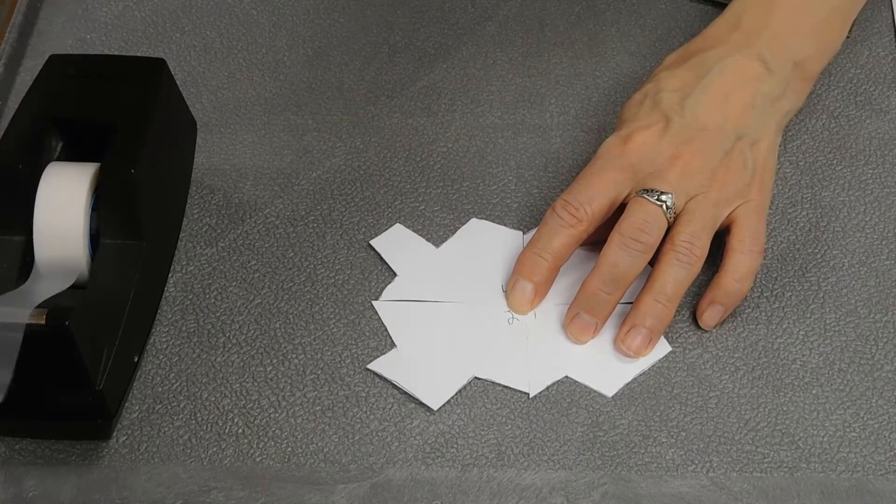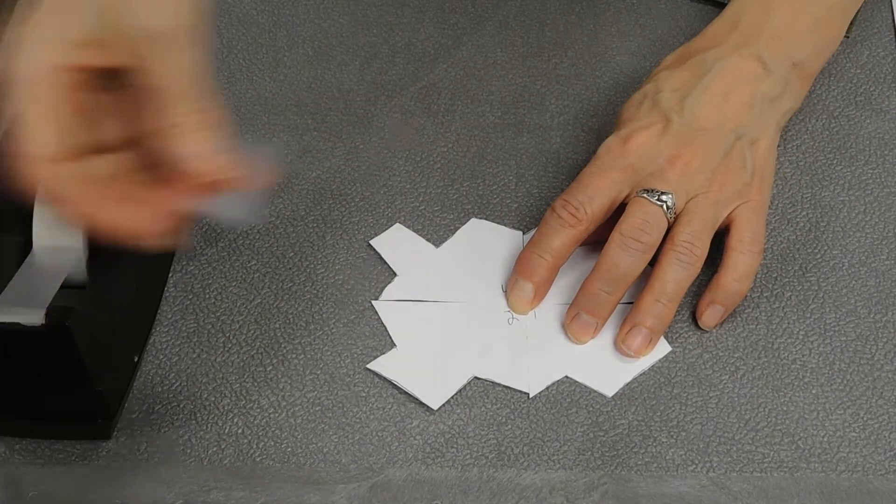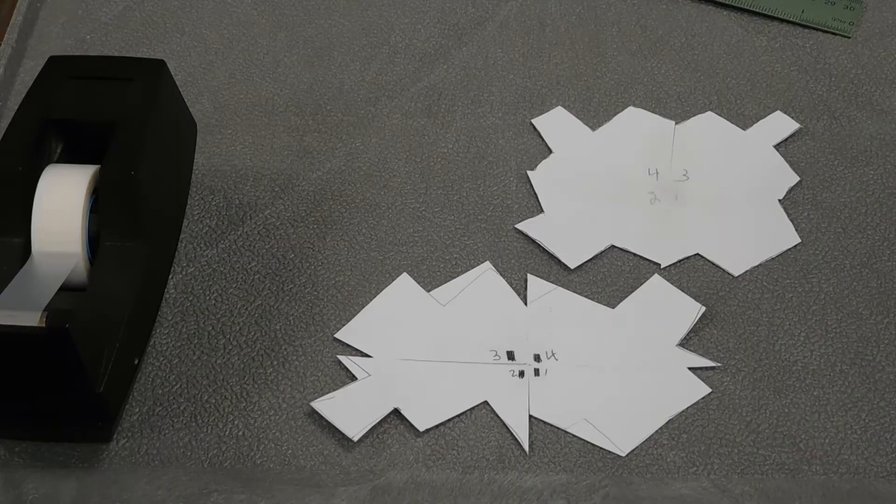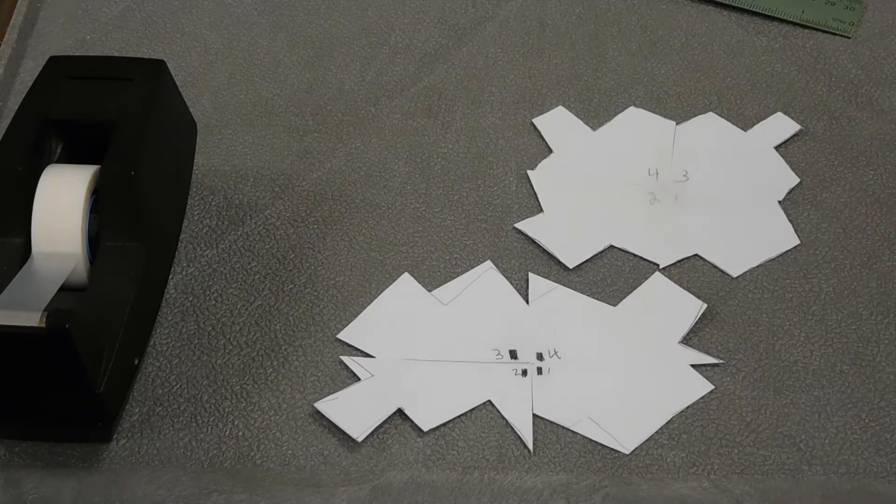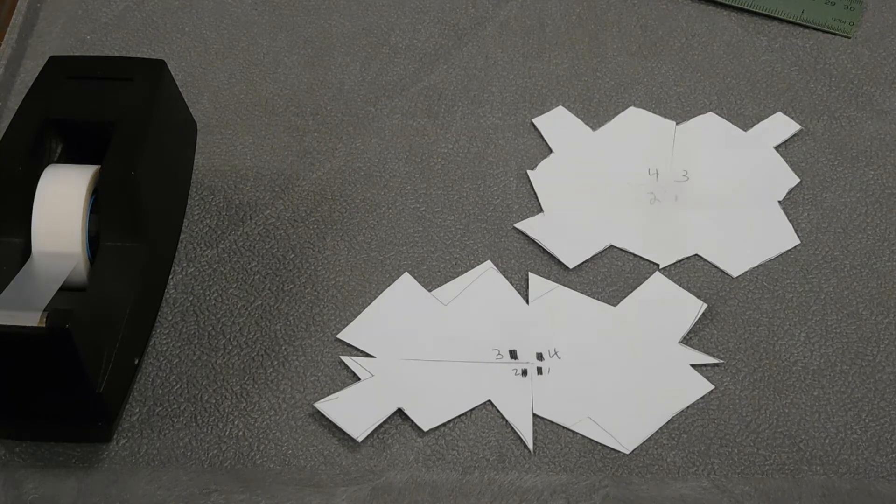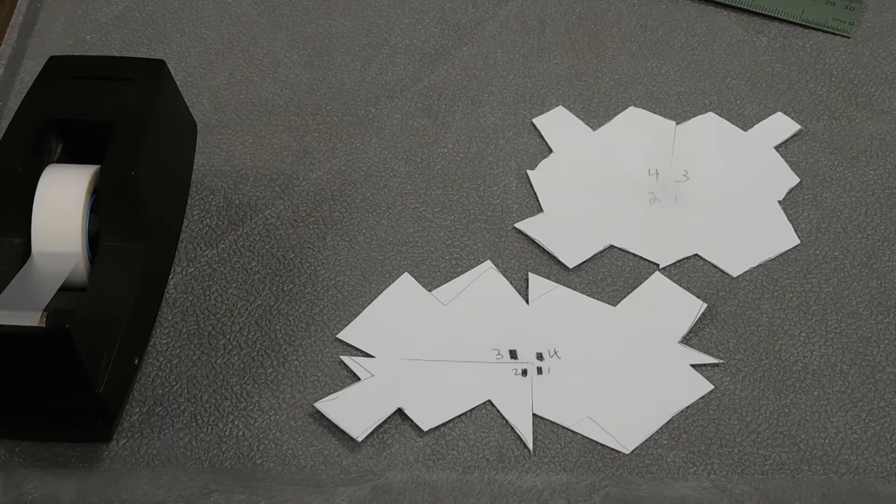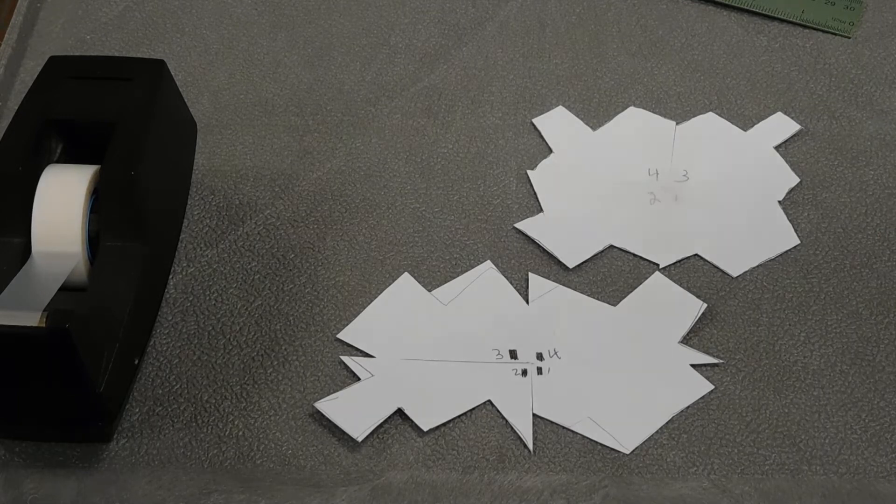Then you're just going to take your tape and tape them in place. So I have a few shapes that I can use to make my tessellations. Now's the point where we need our pencil and our paper again.